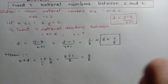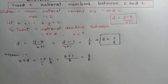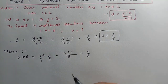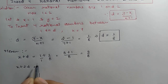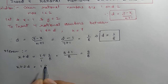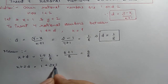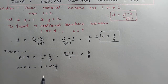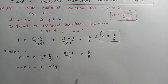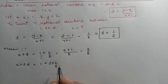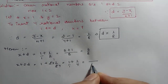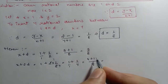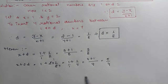Now for the second rational number, simply x plus 2d. So x is 1 plus 2 into d, and d is 1 by 8. So 2 into 1/8 gives 2 by 8, which simplifies — 2 ones are 2, 2 fours are 8. So 1 plus 1 by 4 gives 4 plus 1 = 5 by 4. The second rational number is 5 by 4.